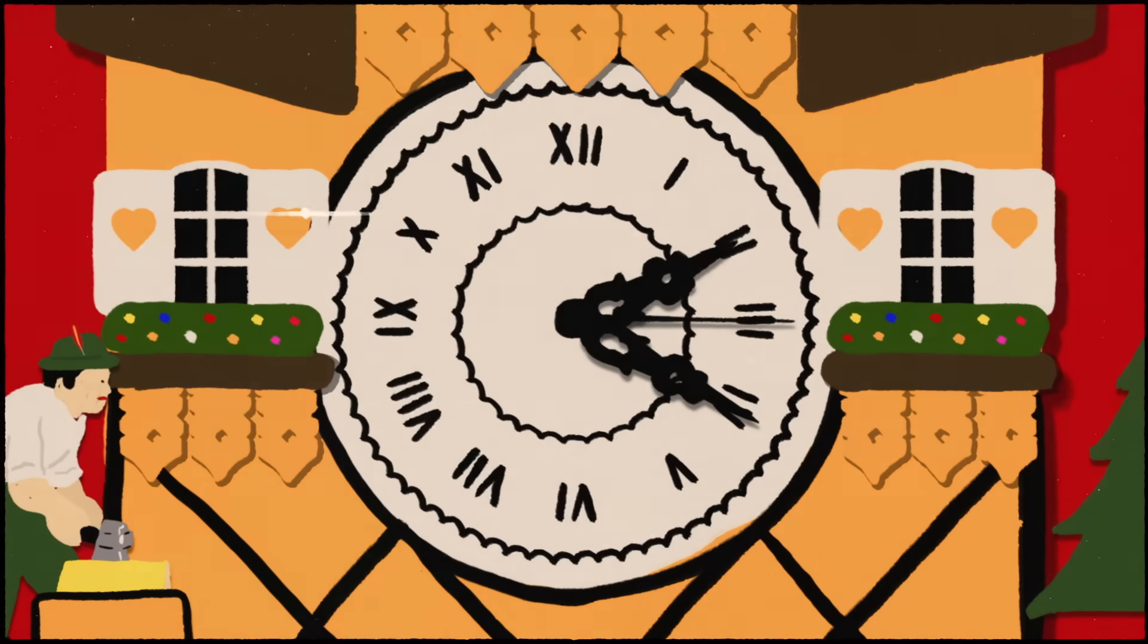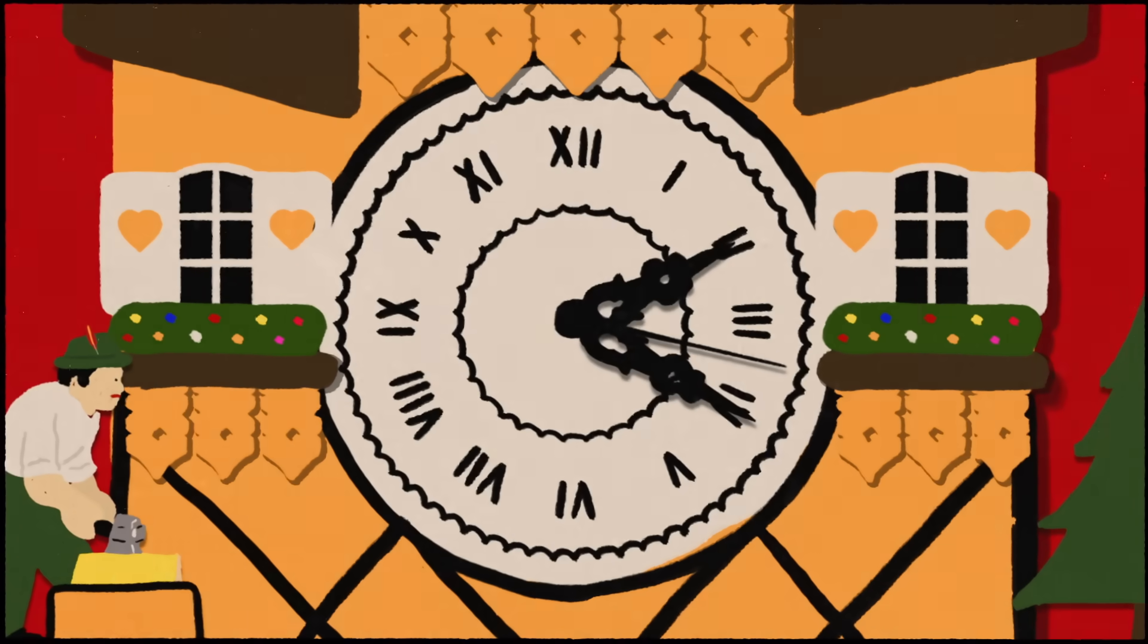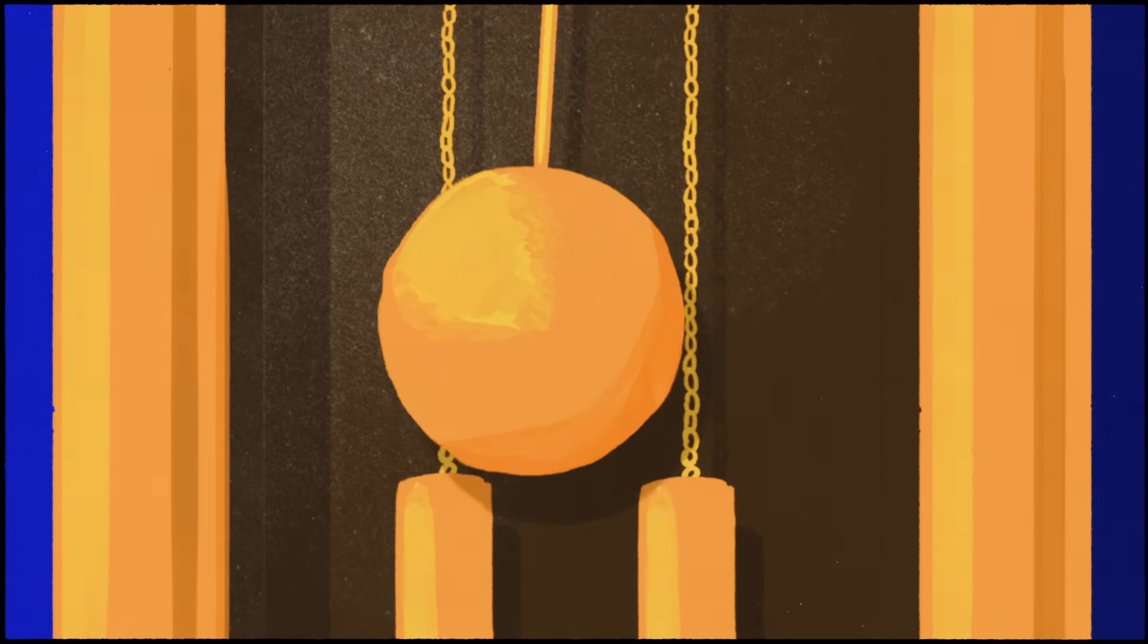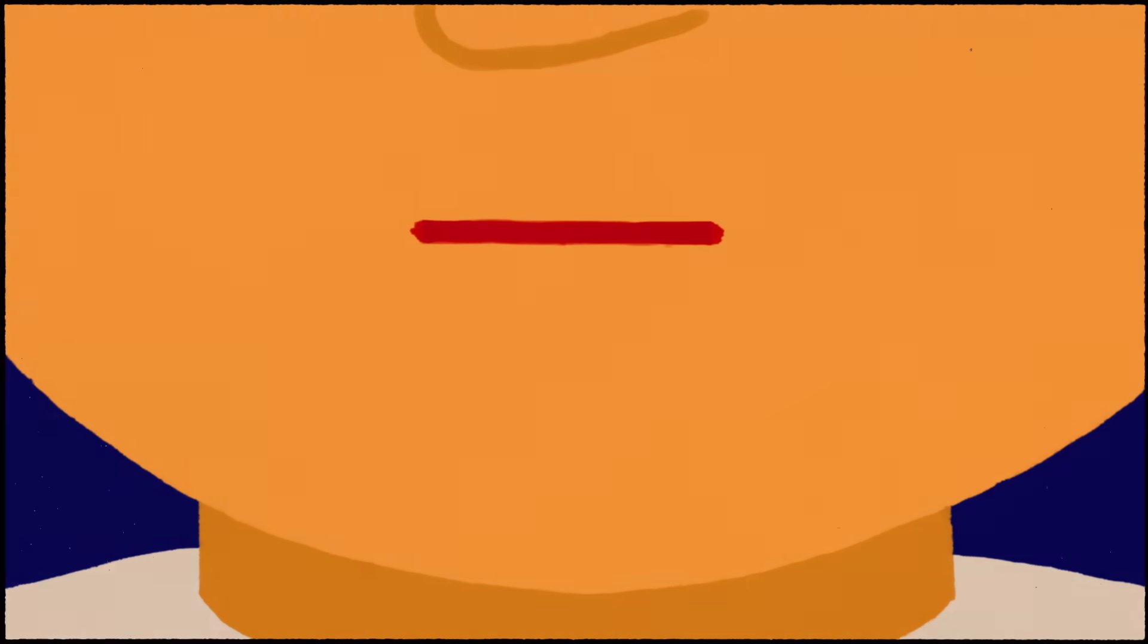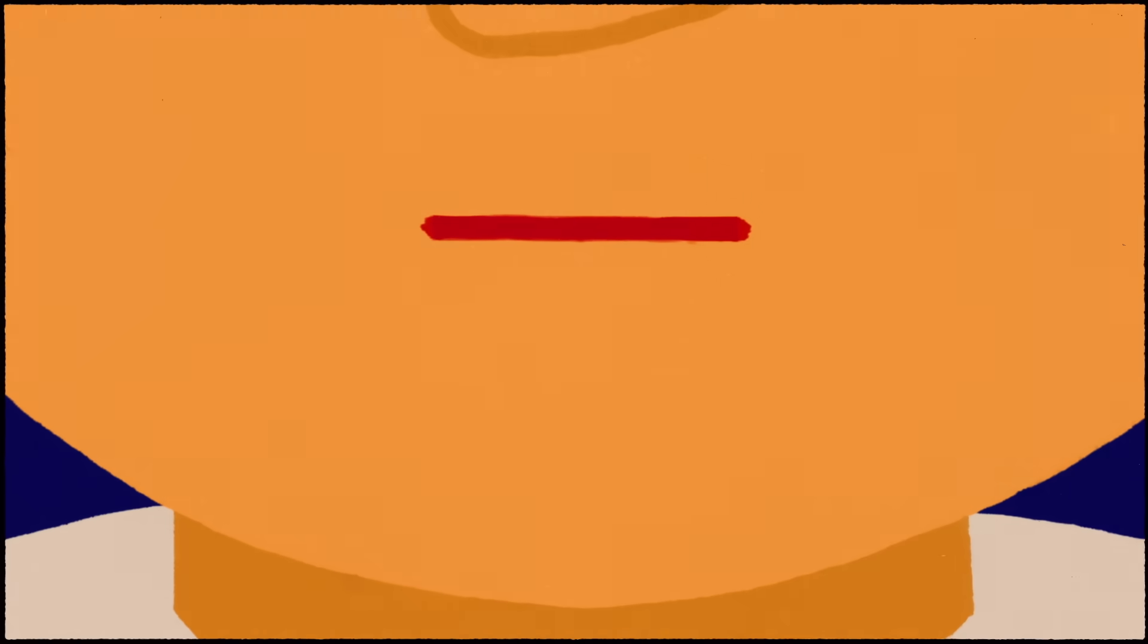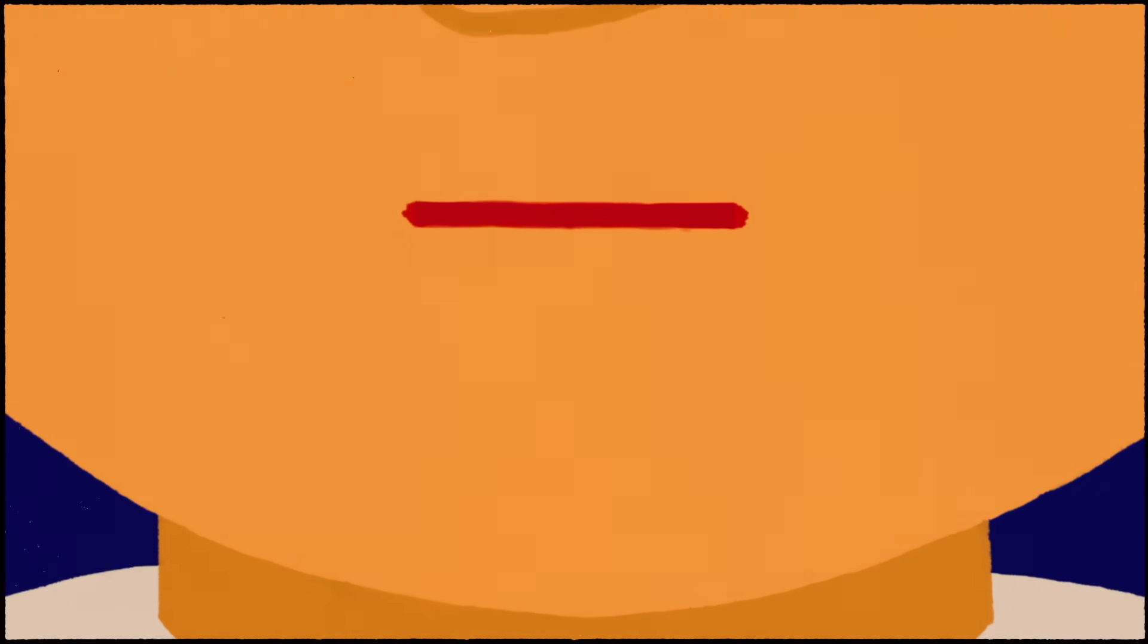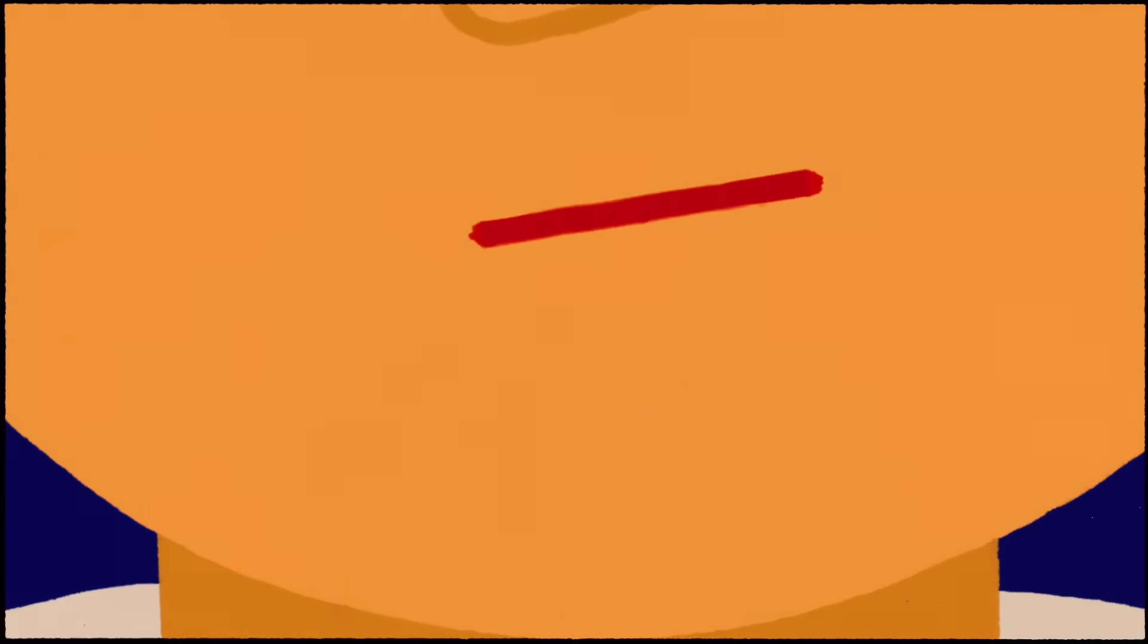It might seem obvious at first— a second is the tick of a clock, the swing of a pendulum, the time it takes to count to one. But how precise are those measurements? What is that length based on? And how can we scientifically define this fundamental unit of time?